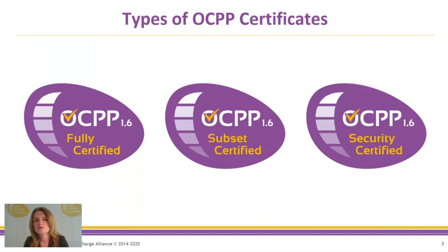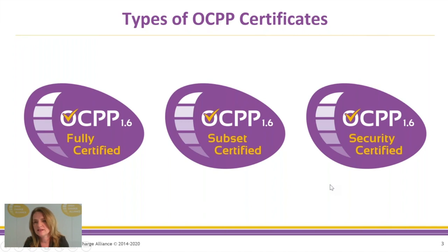You can also achieve OCPP 1.6 subset certificates, meaning you have certified certain parts of OCPP. For anyone looking at a subset certificate, it's really important to check which parts are covered and which are not. Lastly, there is the OCPP 1.6 security certificate. The reason it is separate is because in the original OCPP 1.6 specification there was no security part — that was added with a security white paper. That's why we made the security certificate a separate certificate.